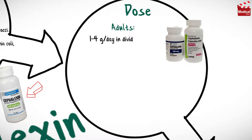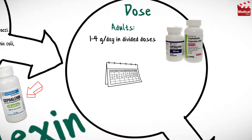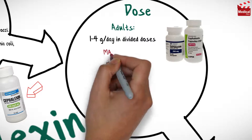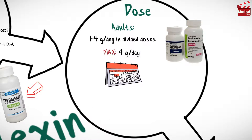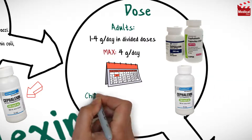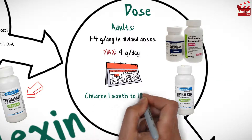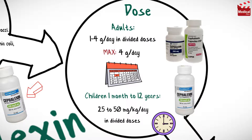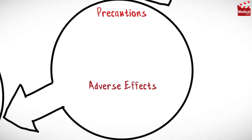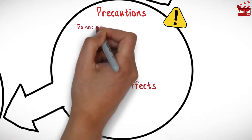The usual dose for adults is 1 to 4 grams per day in divided doses, and the maximum dose is 4 grams per day. For children from 1 month to 12 years, the usual dose is 25 to 50 milligrams per kilogram per day in divided doses.